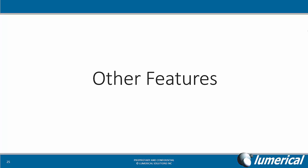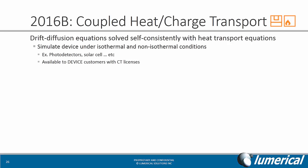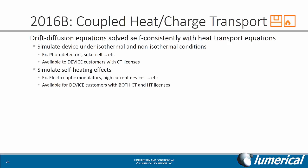Now onto the remaining features for the 2016B release. We have a new coupled heat and charge transport mode, which solves the drift-diffusion equations self-consistently with the heat transport equations. This allows you to simulate devices under both isothermal and non-isothermal conditions, which is necessary for devices like photodetectors and solar cells. It also allows for the simulation of self-heating effects, which are important for electro-optic modulators and high current devices.